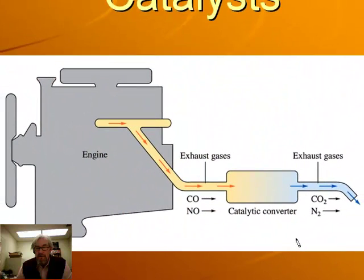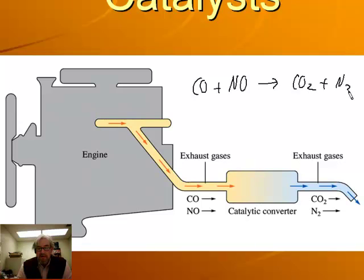The catalytic converter in a car uses heterogeneous catalysis to reduce carbon monoxide and nitrogen monoxide emissions. The reaction 2CO + 2NO → 2CO2 + N2 proceeds too slowly in a normal exhaust pipe. Since the 1970s, cars have used catalytic converters with a platinum substrate that particles stick to, making collisions more likely and greatly increasing the reaction rate. This results in much lower CO and NO levels in car exhaust — a practical example of heterogeneous catalysis.